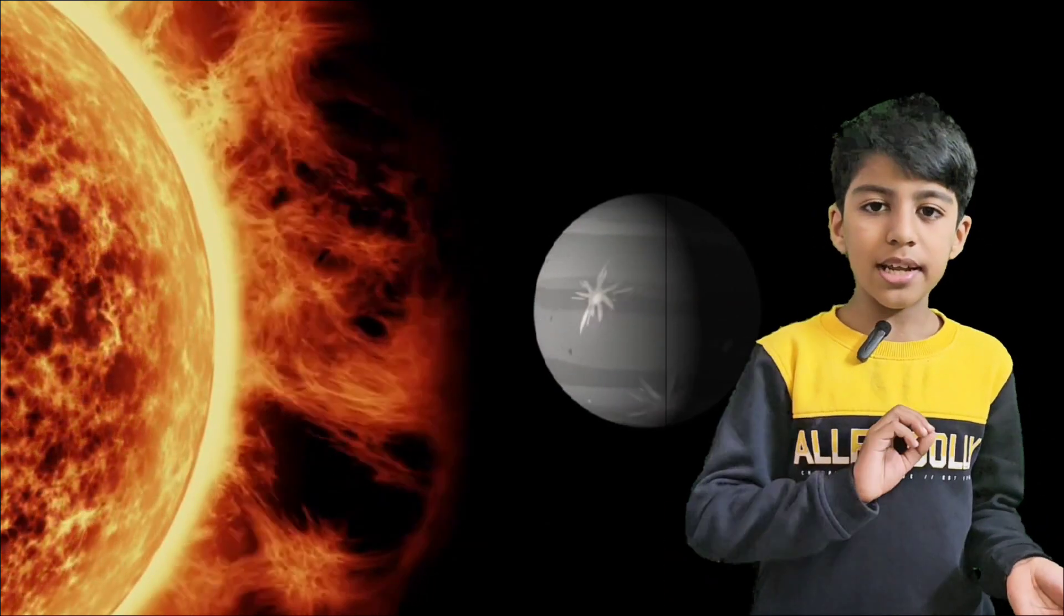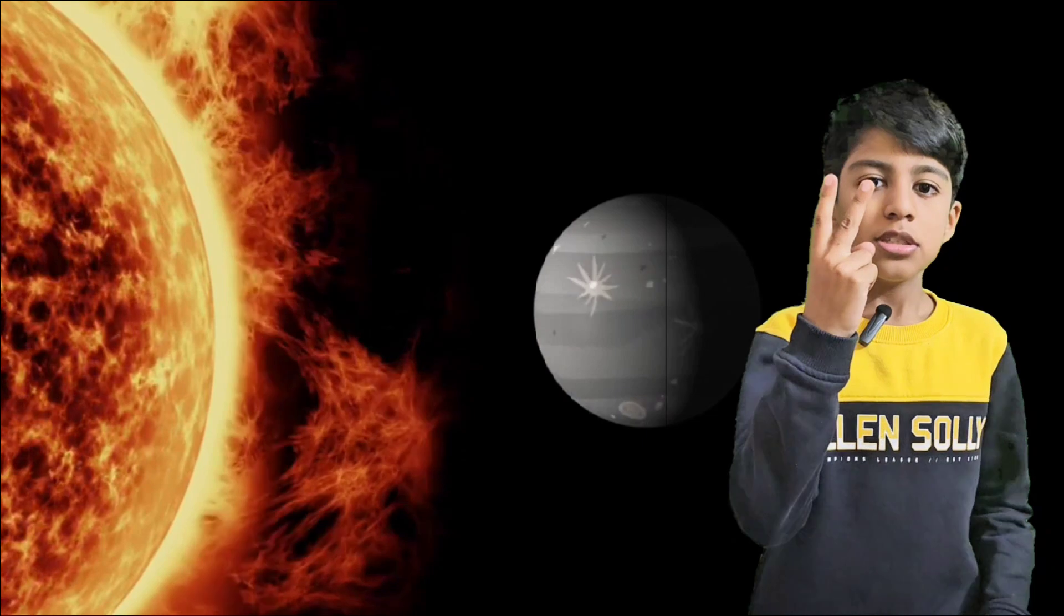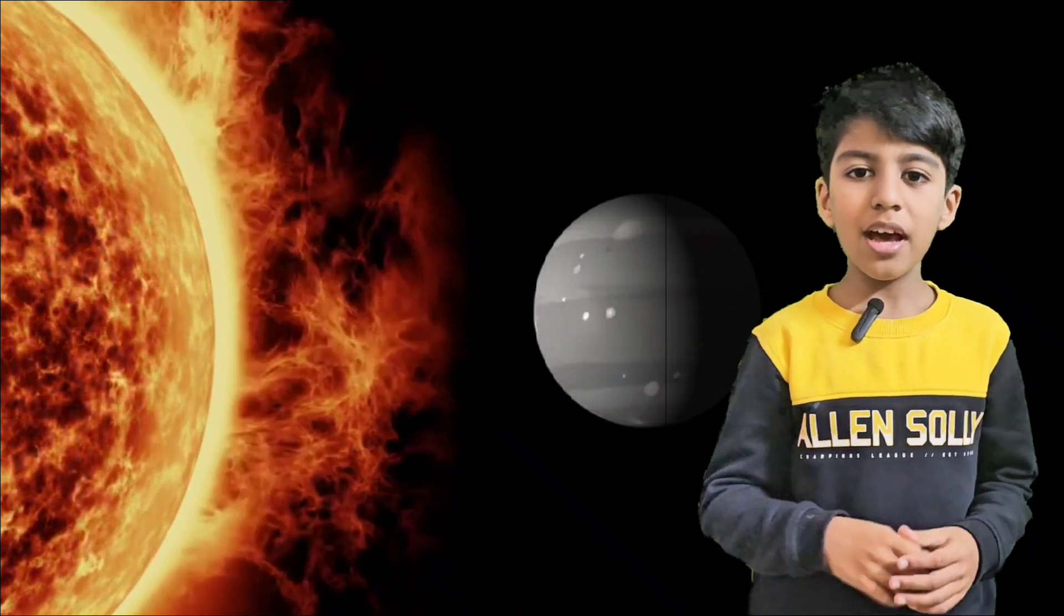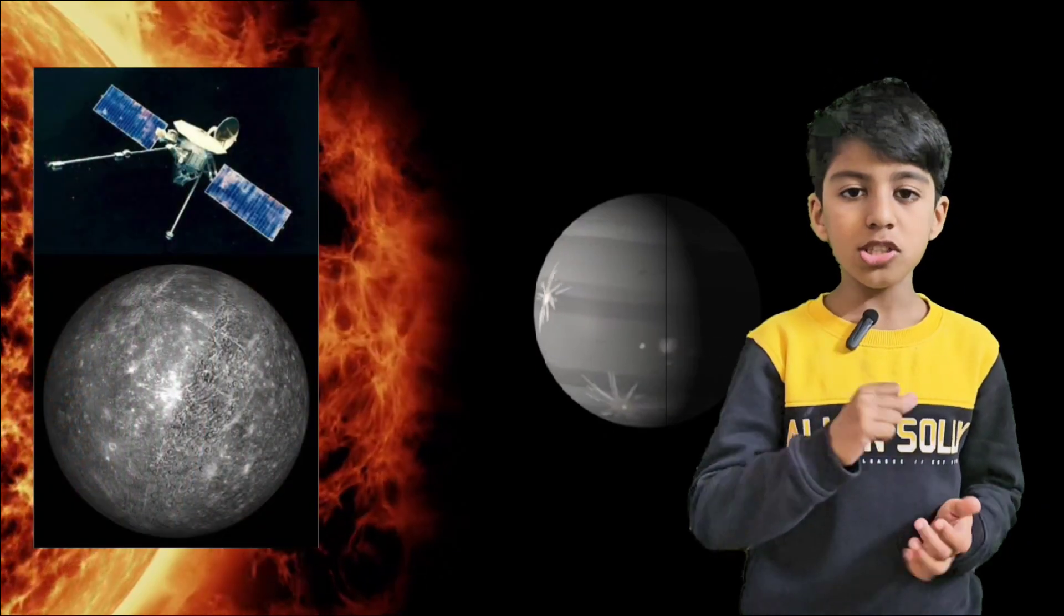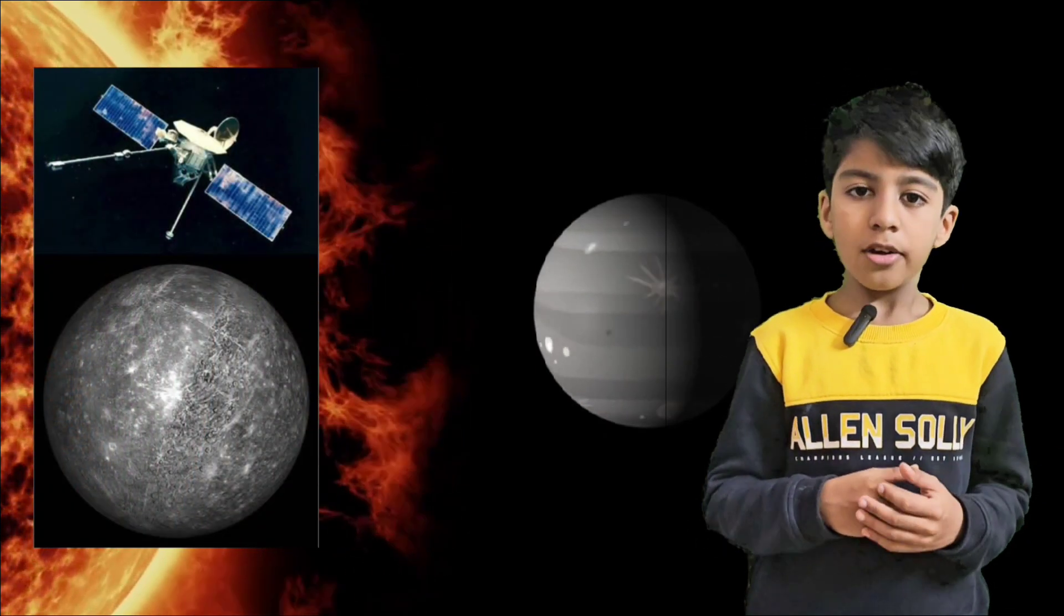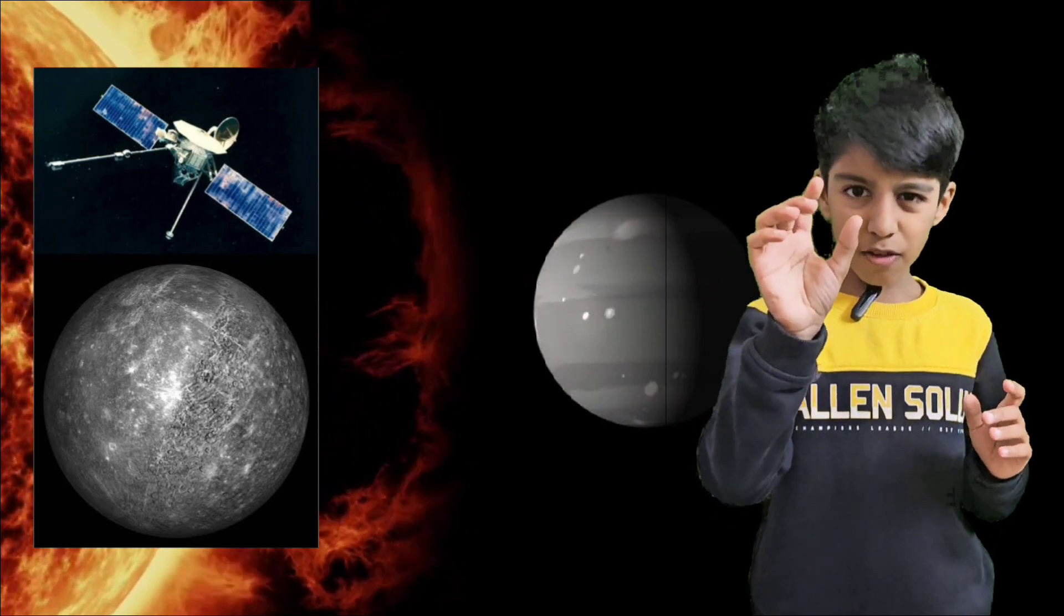They are Mariner 10 and Messenger. Mariner 10 was launched in 1975 and was the first space probe to take a clear photo of Mercury, and it discovered that the planet had a magnetic field.